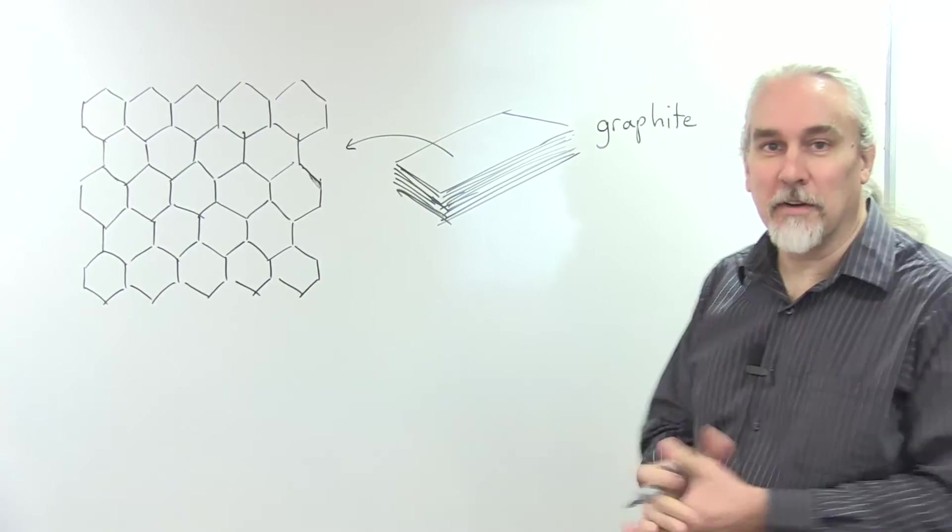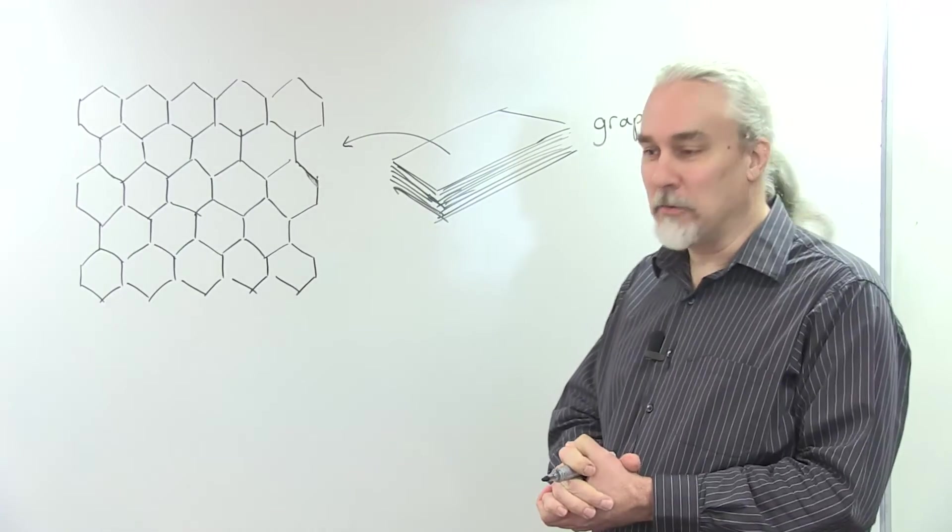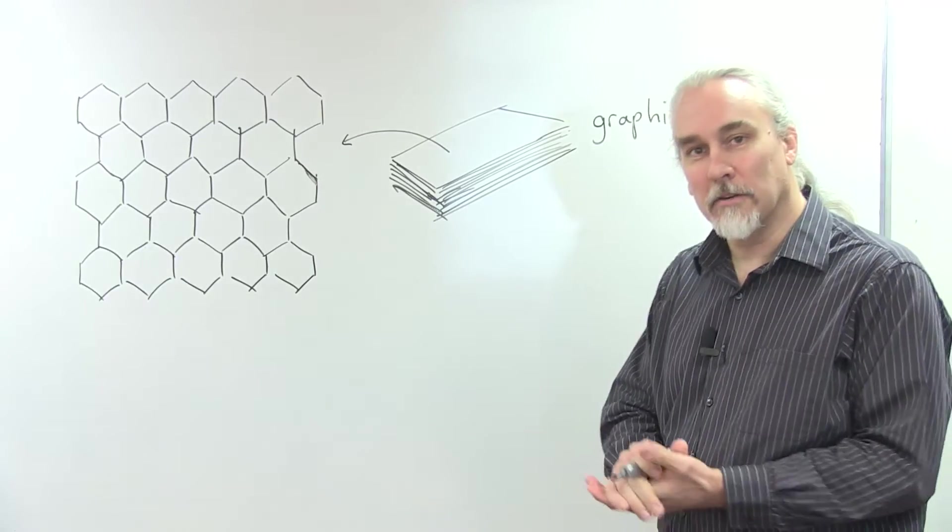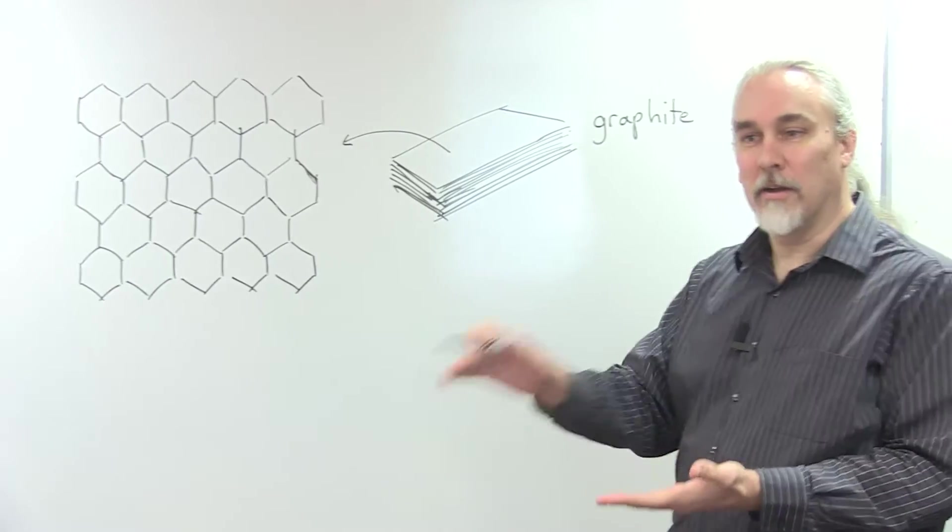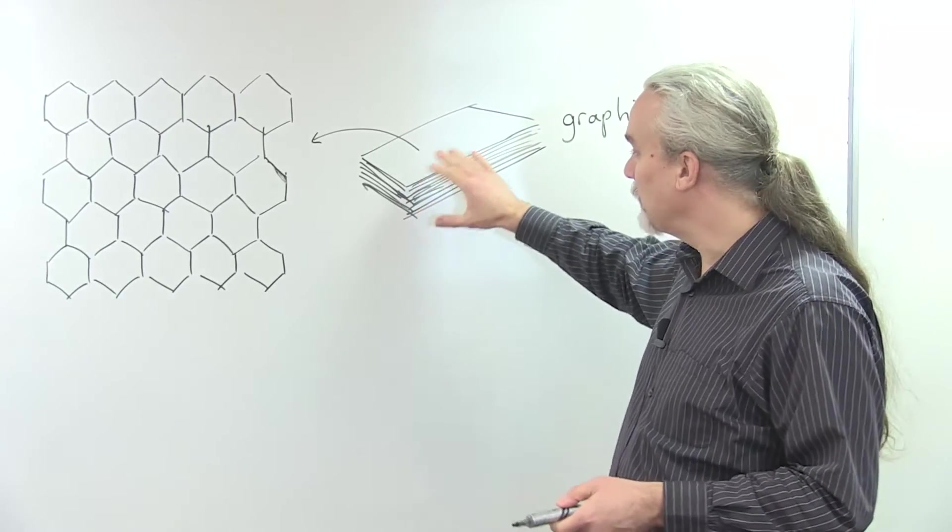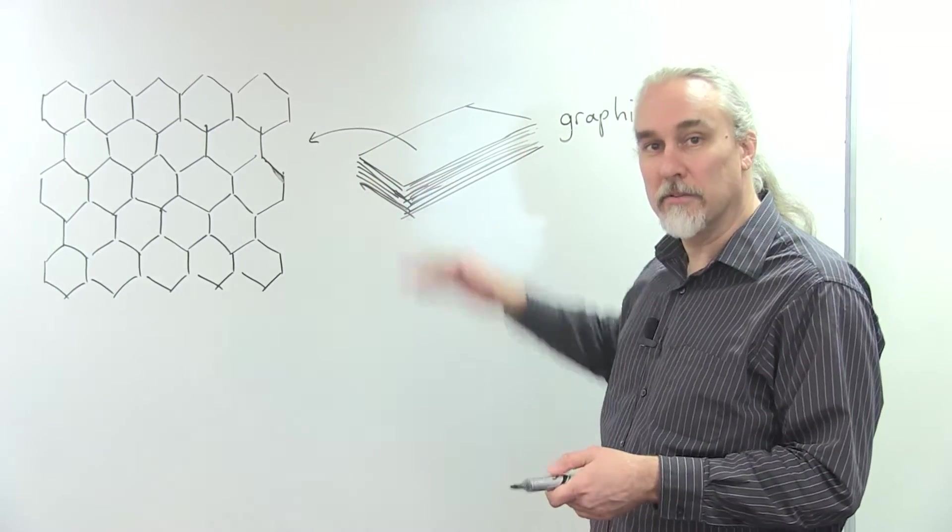Graphite is the material that you find in your pencil lead, and when you write on a piece of paper, the graphite in your pencil comes off on the paper, and the reason it does that is that graphite is a material that comes in layers or sheets.